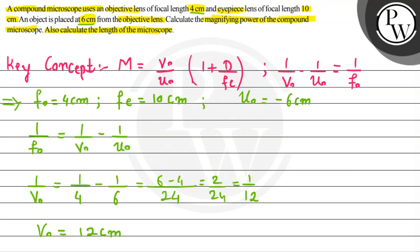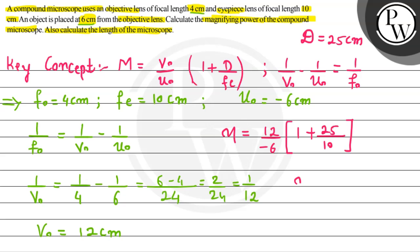Now, applying the magnification power formula of the compound microscope: M equals minus of v-naught by u-naught, in bracket 1 plus D by f of E. Here v-naught is 12 cm and u-naught is minus 6 cm. Capital D for the compound microscope is 25 cm and f of E is 10 cm. Simplifying, the magnification power comes out to minus 7.